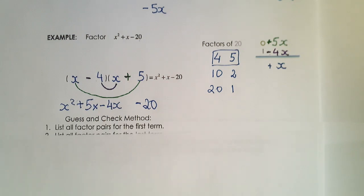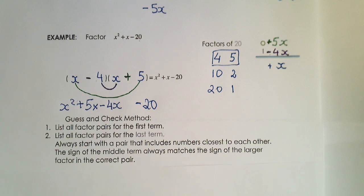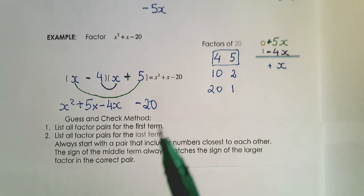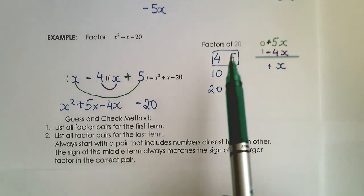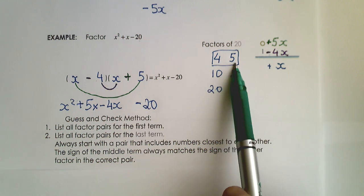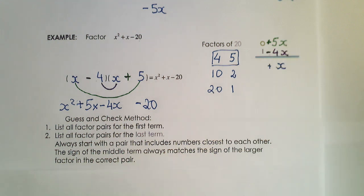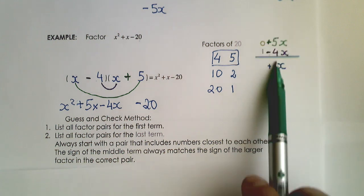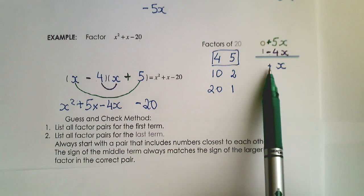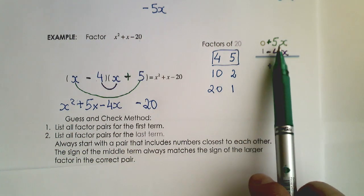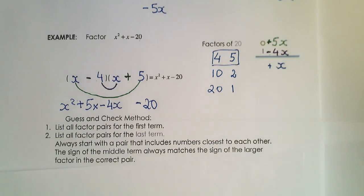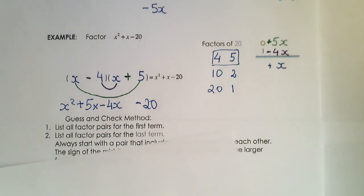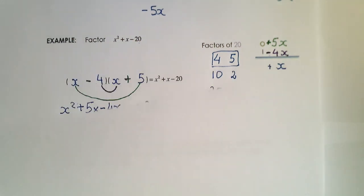To summarize: we always list factors for the first term first, then list factors for the last term and choose the pair closest to each other. When deciding on signs, remember that the sign of the middle term always corresponds to the sign of the larger of the two factors in the correct pair.